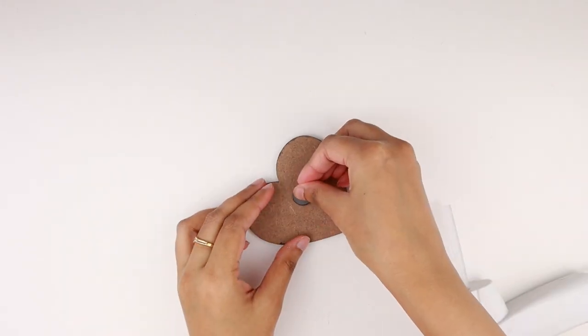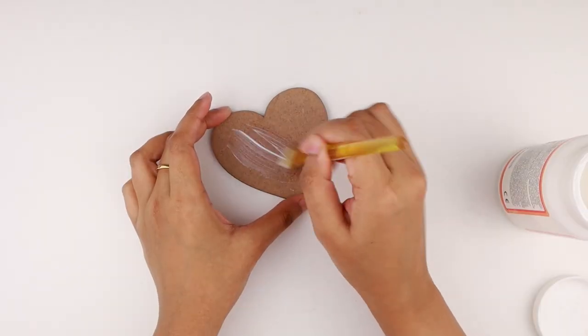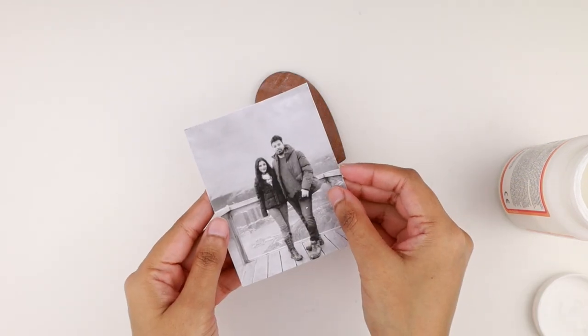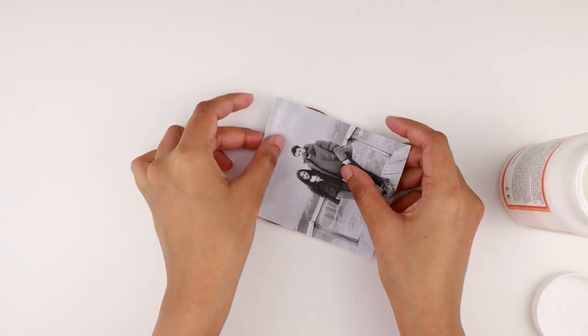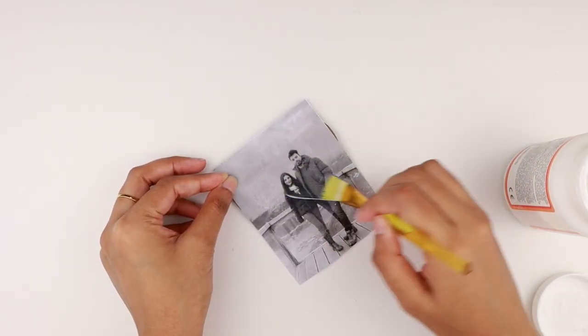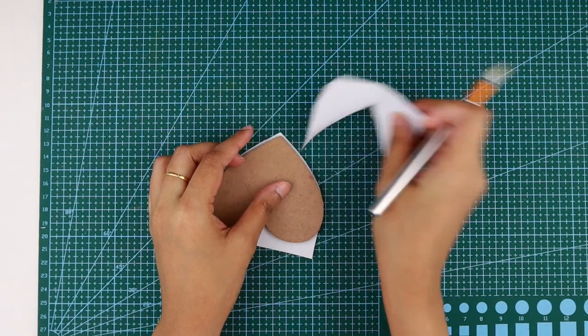I pressed it down and held it in place till the glue cooled down. Next I grabbed the other wooden heart and applied a thin layer of Mod Podge on it. I printed a picture of me and my husband and pasted it on the heart. Then I applied another layer of Mod Podge on the picture to decoupage it. After the Mod Podge dried, I cut out the extra paper using an exacto knife.